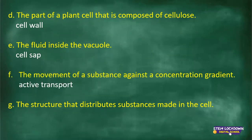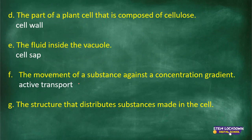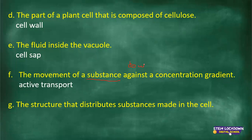The movement of a substance against a concentration gradient is active transport. If it moves down a concentration gradient, it's either diffusion or facilitated diffusion. Osmosis is the movement of water down a concentration gradient. Now — the structure that distributes substances made in the cell — I'm still waiting for an answer.